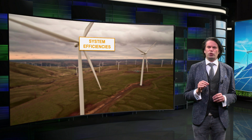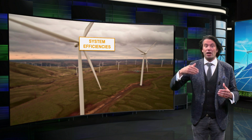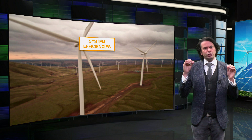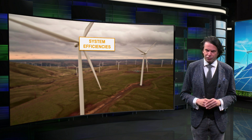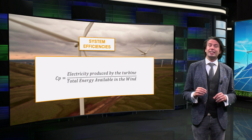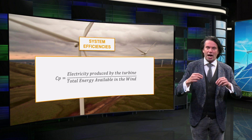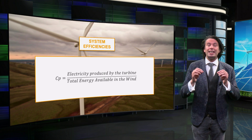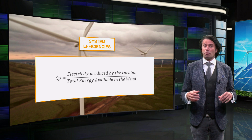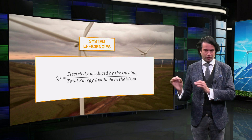To obtain the power output of a wind turbine, the potential power in the wind needs to be multiplied by the system's efficiencies. The terminology used for the product of all conversion efficiencies is called the power coefficient. This power coefficient is the electricity produced by the wind turbine divided by the primary energy potential in the wind. This ratio includes the conversion efficiencies from kinetic energy to mechanical energy, and from mechanical energy to electrical energy.